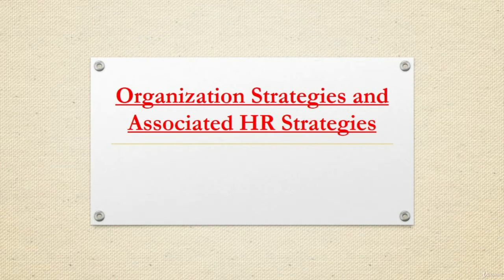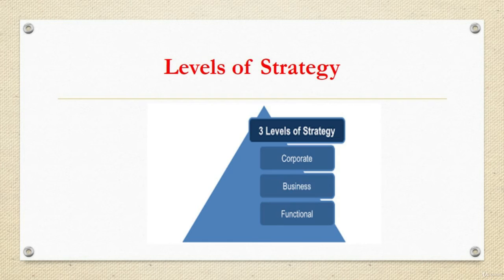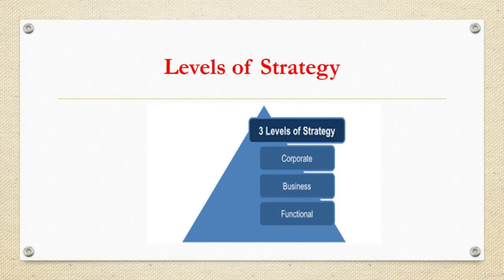We will discuss organization strategies and associated HR strategies. Corporate strategy is usually made at the upper level of the organization and is designed by the head of the hierarchy. Strategy can be formulated at three levels: the corporate level, the business level, and the functional level. Corporate level strategy is formulated for the organization as a whole. Corporate strategy deals with decisions related to various business areas in which the firm operates and competes. At the business unit level, strategy is formulated to convert the corporate vision into reality.